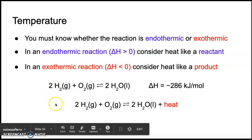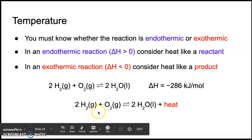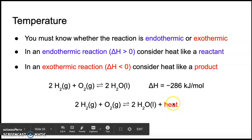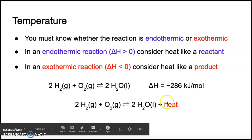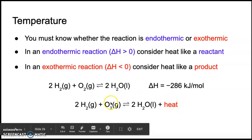We can look at the same reaction: hydrogen plus oxygen forming water. The delta H value for this reaction is negative 286 kilojoules per mole, meaning it's an exothermic reaction. We can write out the equation and add heat on the product side, since this reaction is producing heat. If we take this hydrogen, oxygen, and water mixture and heat it up — put it on a hot plate — that's like adding a product, so the equilibrium shifts to the left and we get more hydrogen and oxygen gas. On the other hand, if we take away heat — put the reaction mixture in an ice bath — it's like taking away a product, so the equilibrium shifts to make more water.